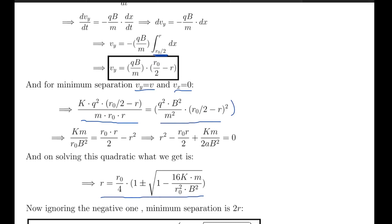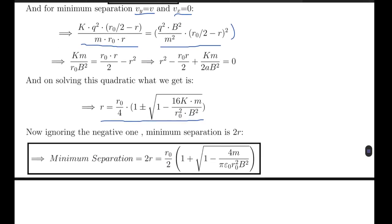So from here, final answer is minimum separation equals to r naught by 2 times (1 plus root of 1 minus 4m by pi epsilon naught r naught squared B squared). Here pi and epsilon naught come from substituting K as 1 by 4 pi epsilon naught. So yeah, that's the final answer. Thank you.